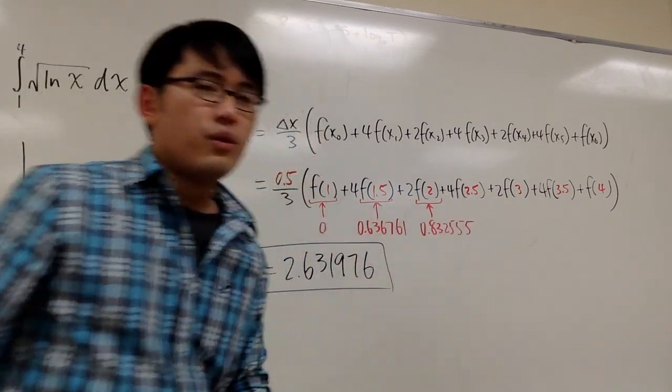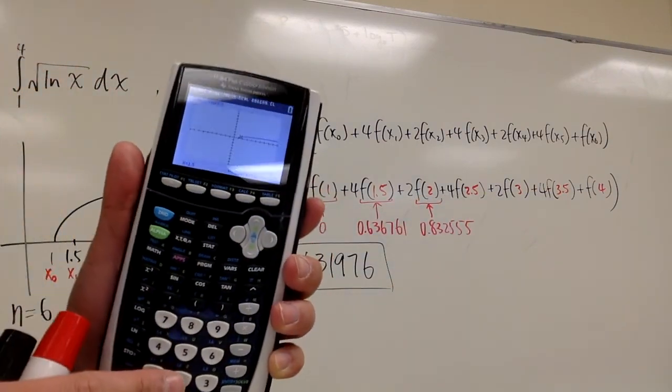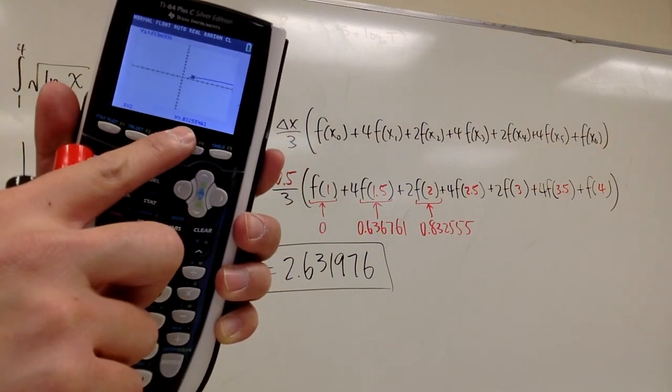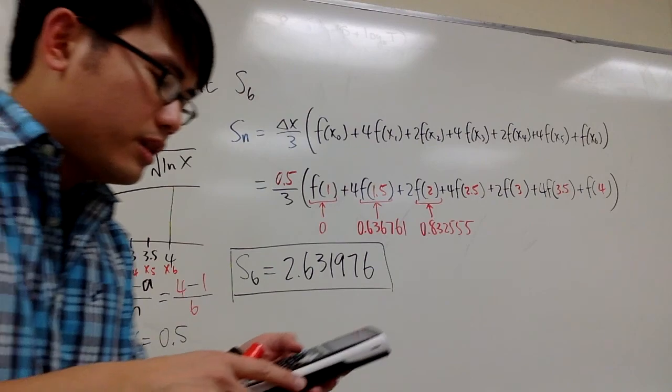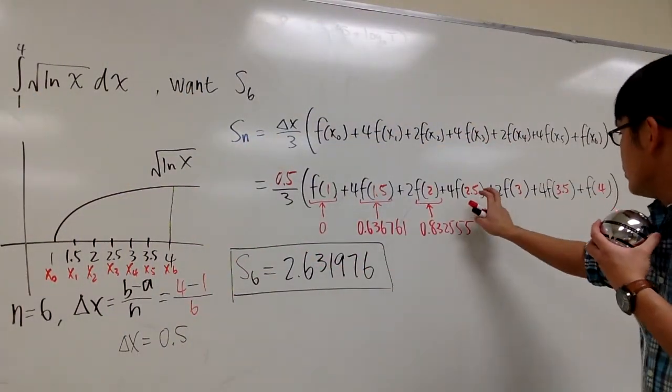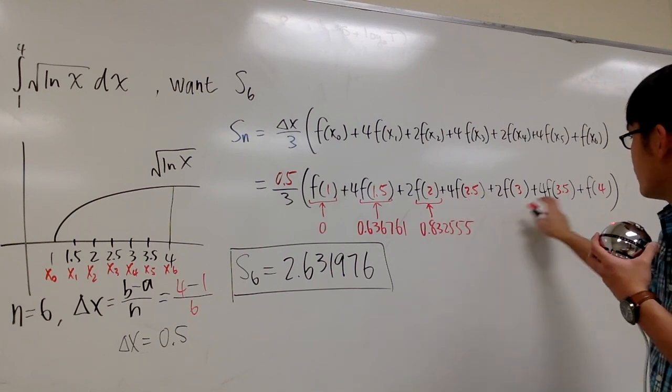And then I can do the same for f of 2. All I want you to do is just overwrite it by pressing 2. And I get this y value. I wrote it down already. That's pretty much all we can do, and then you just need to do the rest.